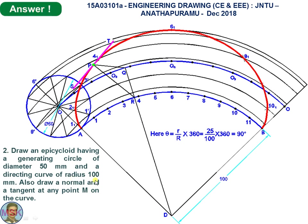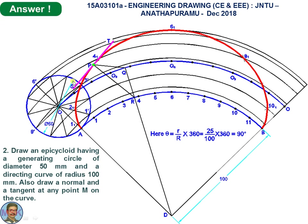First draw the directing curve with D as center and 100 mm as radius. The arc length AB must equal the circumference of the rolling circle. You also need to measure the sector angle theta using the formula: theta = (r / R) × 360, where small r is the radius of the rolling circle and capital R is the radius of the directing curve. So theta = 25/100 × 360 = 90 degrees. This is the directing curve AB.